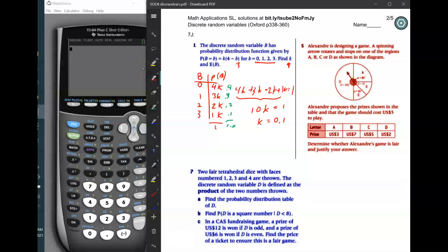Number five. Alishandli is designing a game. A spinning arrow rotates and stops on one of the regions A, B, C, D, as shown in the diagram. Alishandli proposes that the prizes shown in the table in the game should cost $5 to play. Determine whether Alishandli's game is fair and justify your answer. So on this one, what we're doing is we're seeing if the game is fair. What does that mean from a math perspective? It means that on average, the game pays you back the exact same amount of money you put into it. In this particular case, you're putting $5 into it, so it has to pay you back on average $5. Otherwise, it's not fair.